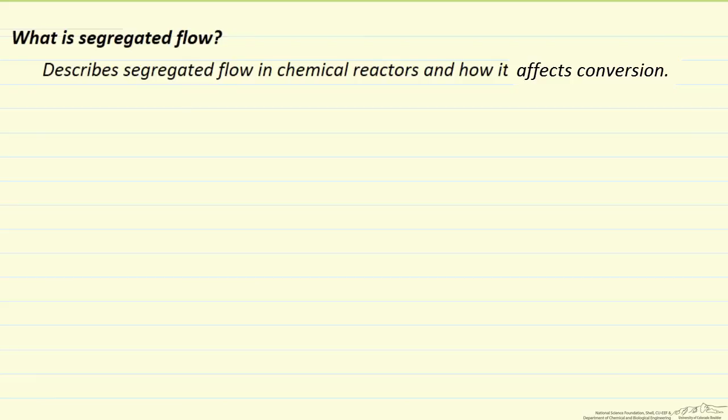I'm going to describe what we mean by segregated flow in a chemical reactor and discuss how it affects conversion, because depending on what assumptions we make about mixing on a local scale, micromixing, we can end up with different conversions, different calculations of conversion for the same reactor.